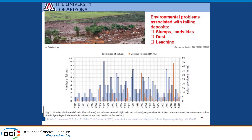One of the basic issues with tailings management is leaching — heavy metals leach into groundwater and pollute it, which is not good for the environment.